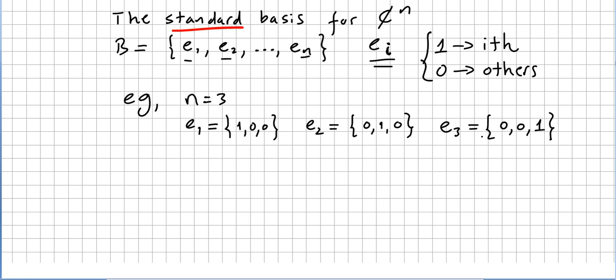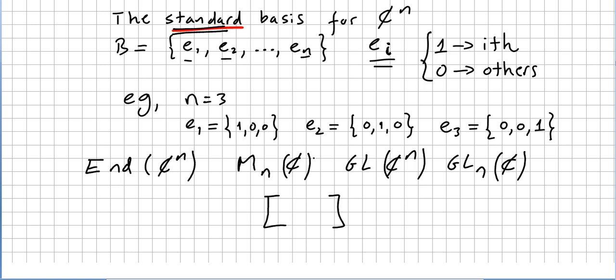From now on when I use the endomorphism of C^n or the space of matrices n by n with entries in the complex numbers or the general linear group of matrices n by n with entries in the complex numbers, if I identify a linear transformation with a certain matrix, that matrix will always be with respect to the standard basis.